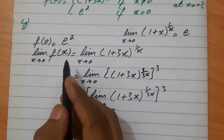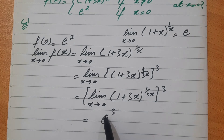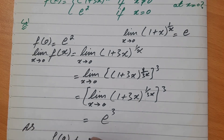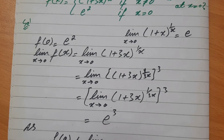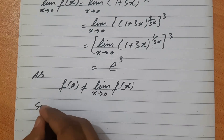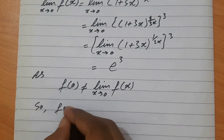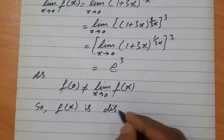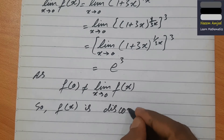तो limit x→0 f(x) = e³। लेकिन f(0) = e² है और limit = e³ है। चूँकि f(0) ≠ limit x→0 f(x), इसलिए f(x) is discontinuous at x = 0।